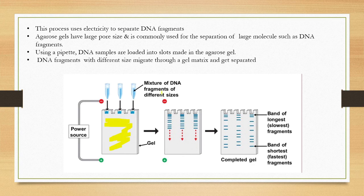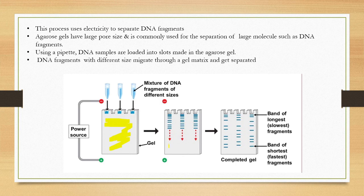DNA samples containing fragments of different sizes are loaded. The DNA fragments of different sizes migrate through the electrophoresis gel matrix and get separated by size. Larger fragments migrate more slowly, forming a band of longest fragments at one end, while smaller fragments migrate faster.